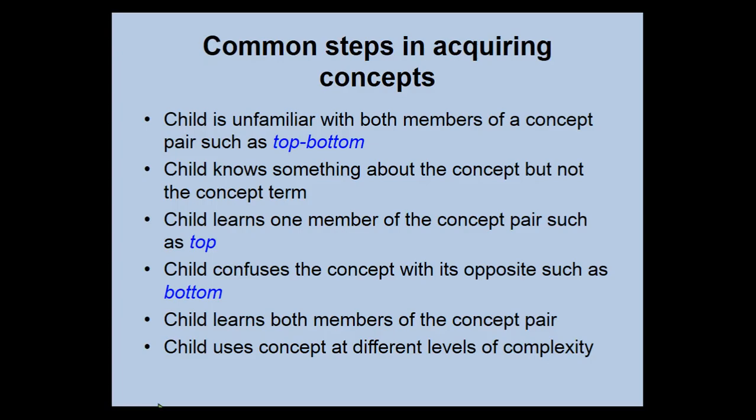Developmentally, a child may not be familiar with either member of a concept pair but knows something about it, then learns one member, often confuses it with its opposite, then learns to use both members, and finally begins to use them at different levels of complexity.